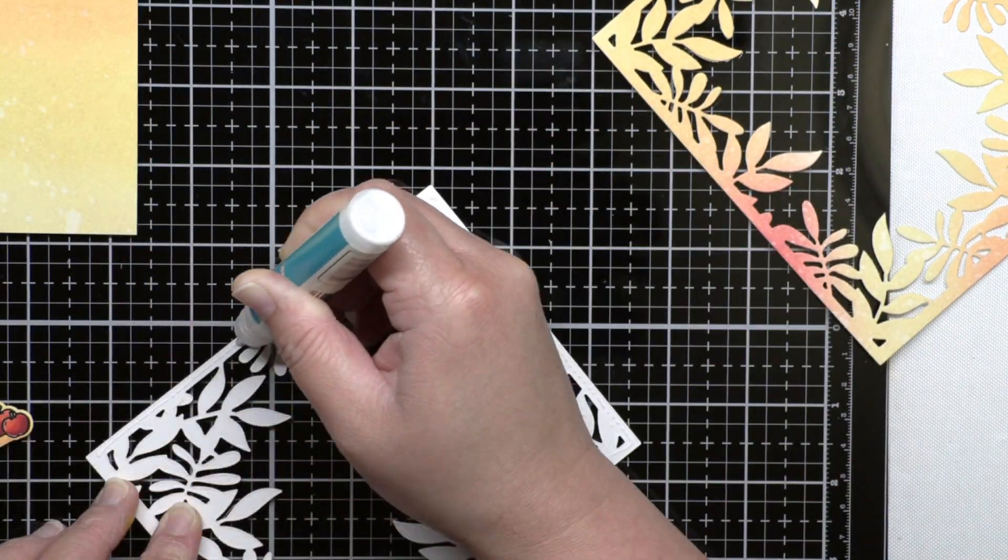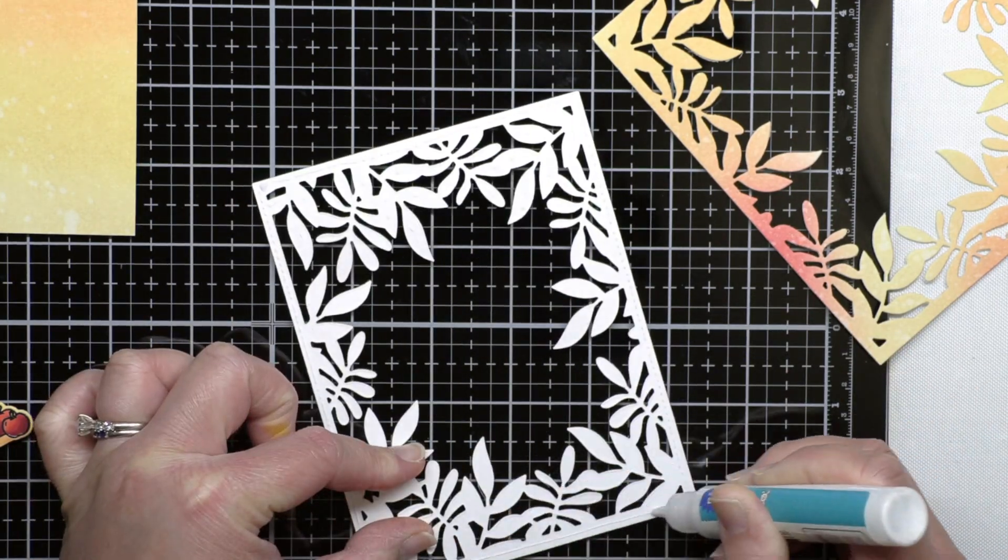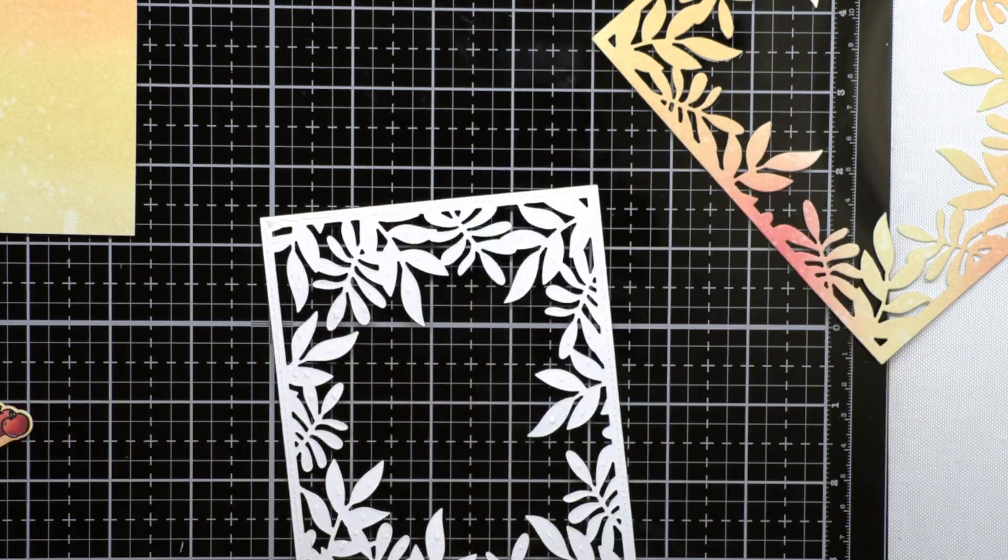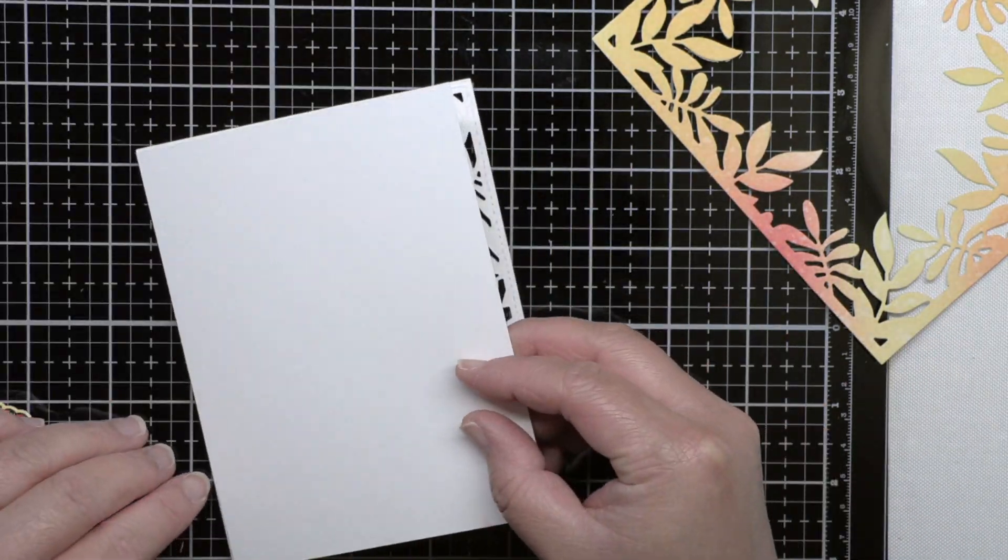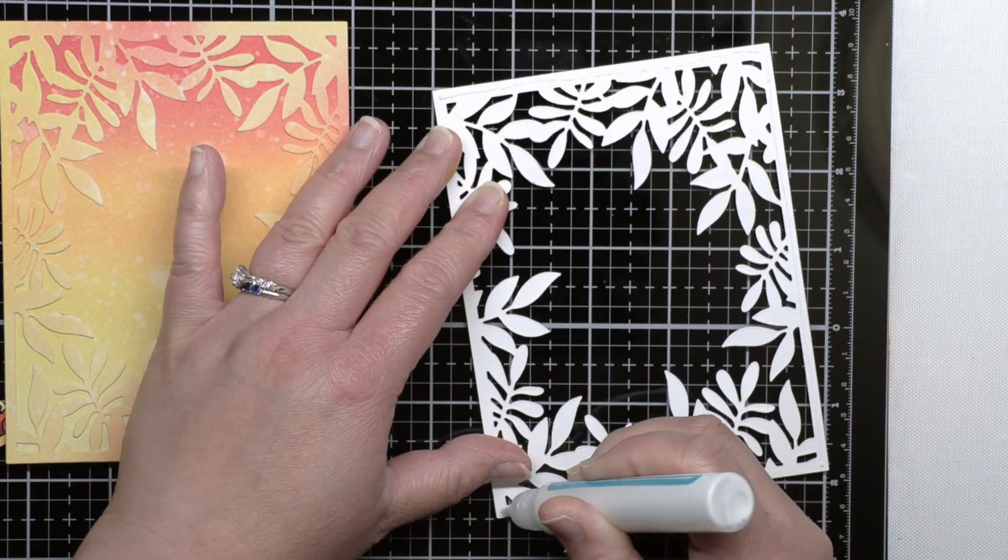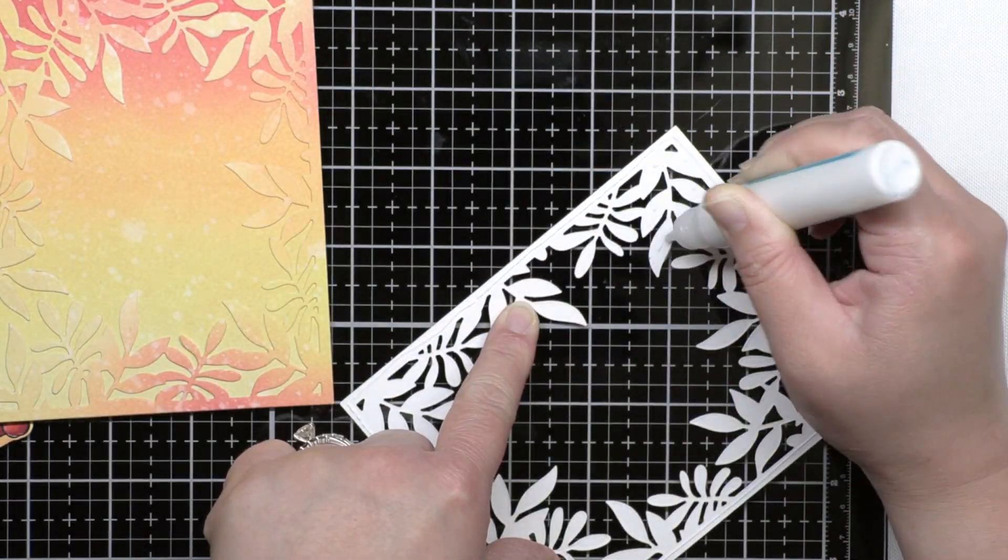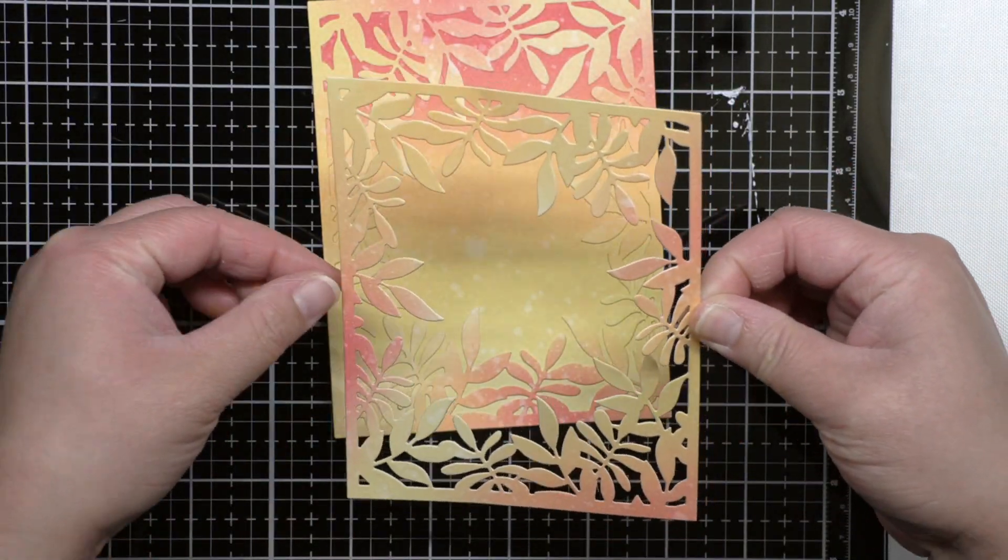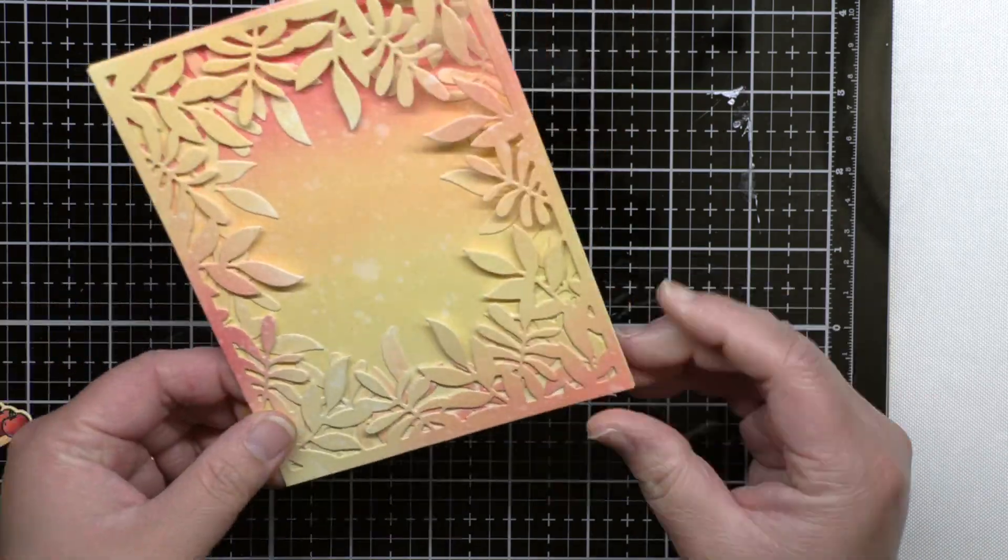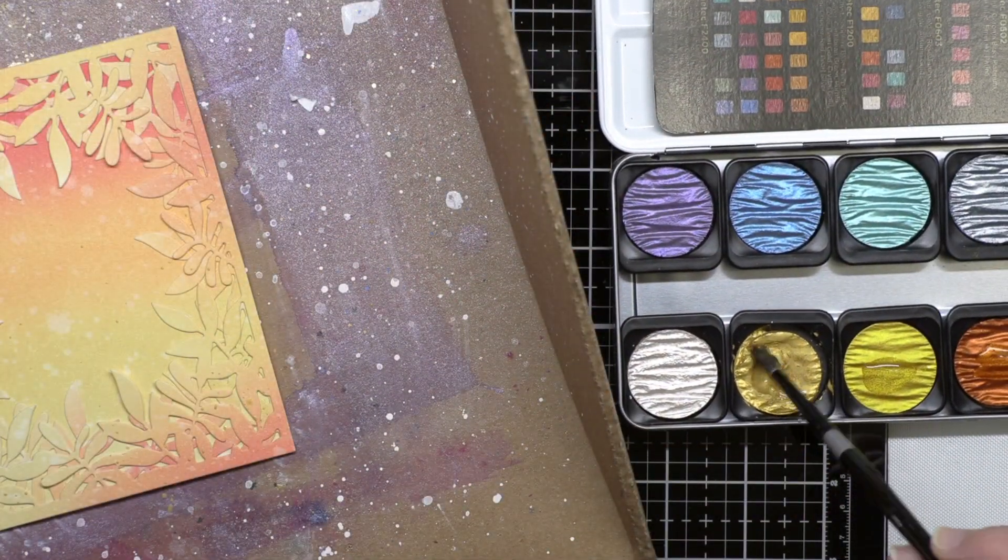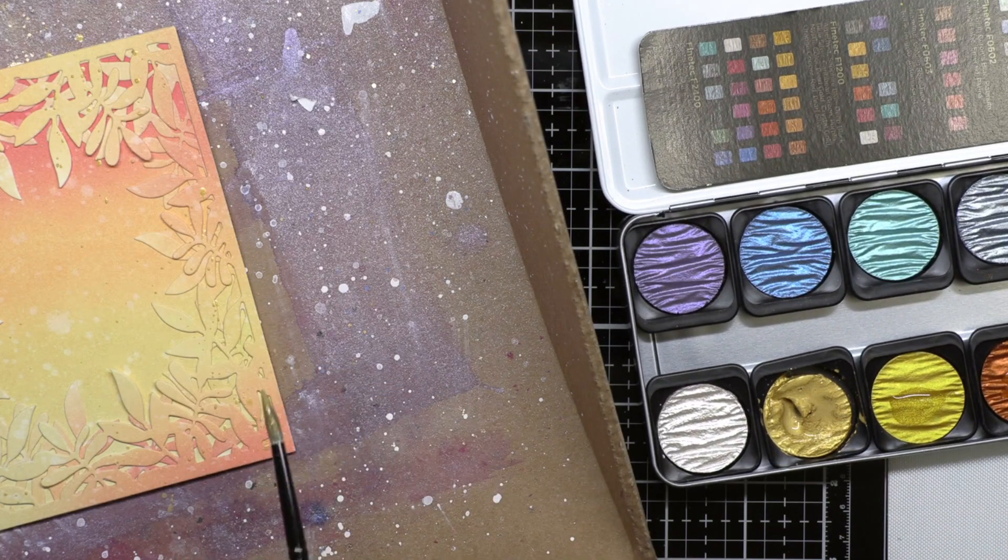Next I adhered one of the leafy border frames to the background panel with liquid adhesive and then adhered the second frame going the opposite direction for more dimension. I splattered the blended panels with various shades of gold and copper metallic ink.